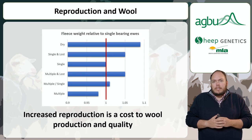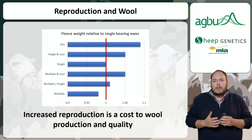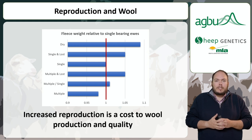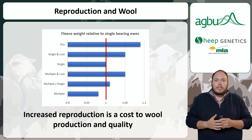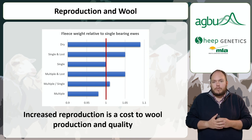An aspect of how we better model the impact of reproduction is how we now account for the cost of reproduction on the production levels of the breeding ewe. In essence, reproduction is not free and the impact of increasing reproduction needs to be accurately costed. One of these costs is how reproduction impacts the wool production of the breeding ewe flock.